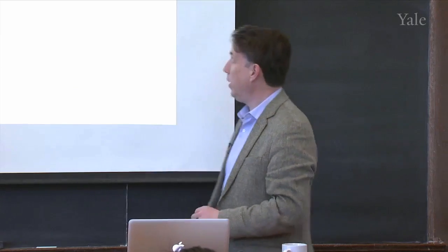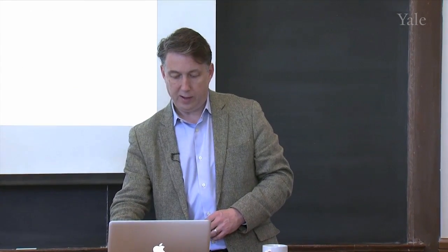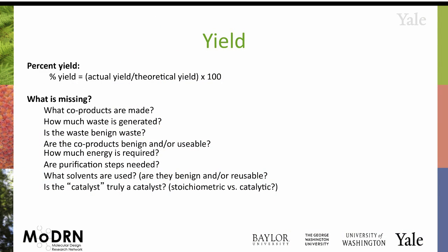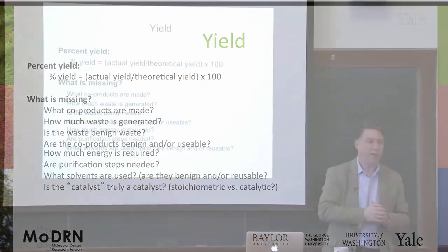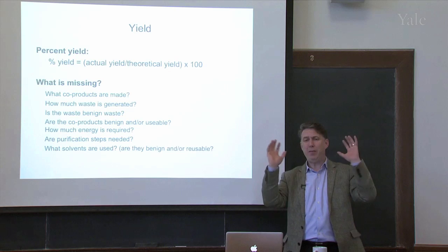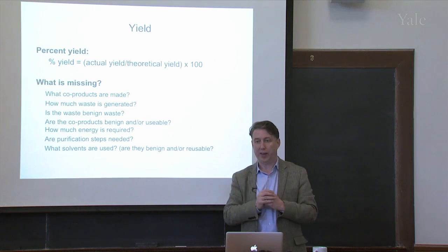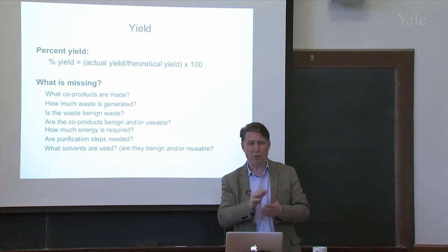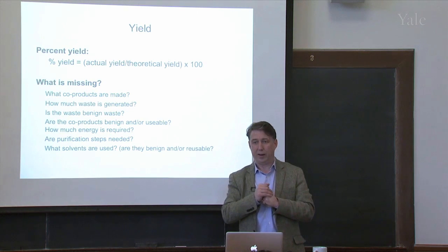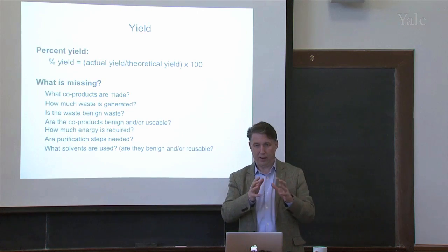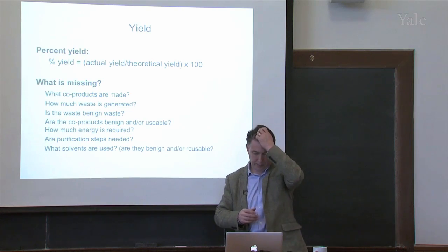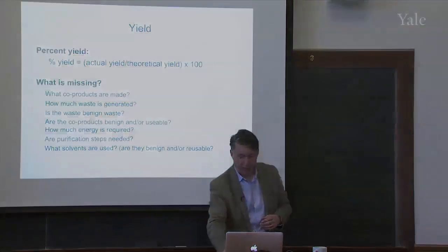So that's just an aside on yield. What is yield missing? What co-products are made? How much waste is generated? What waste is benign? How much energy is required? What purification steps are needed? Yield is a measure, and I can't emphasize enough how that measure has been the gold standard by which you are judged — yet even today, I'm ashamed to admit, that is the metric that is taught and quoted in the literature, while it's missing all of these considerations.